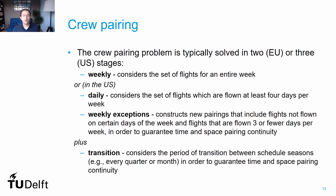However, several boundary requirements may require solving this problem in parts. In Europe, this is usually done in two stages: a weekly problem, in which the set of pairings considered per week are chosen, and a transition problem, in which the weeks of transition between seasons are handled. In the US, the process is done in three stages: first, frequent flights repeated most days of the week are covered in a pairing problem solved for each day of the week; then, flights with lower frequency are addressed in a second pairing problem; and finally, transition periods are covered in a new set of pairings.